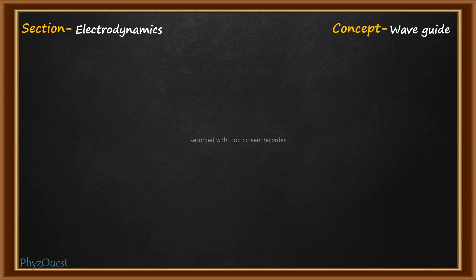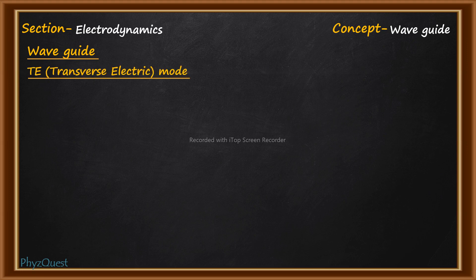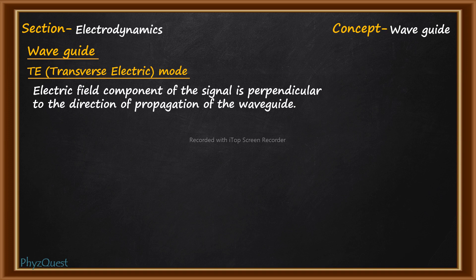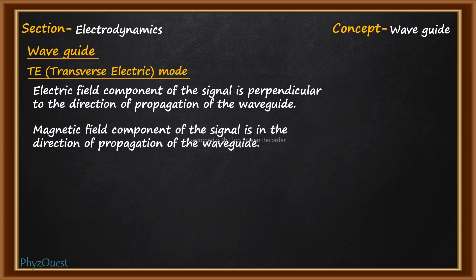This question comes from the section electrodynamics and the concept involved is waveguide. Energy can propagate through vacuum or any medium depending on the type of energy and the nature of the medium. Electromagnetic energy propagates as a wave, and the direction of propagation can be guided in a path called a waveguide. There are two main modes: the first is the transverse electric or TE mode, where the electric field component of the signal is perpendicular to the direction of propagation, whereas the magnetic field component is along the direction of propagation.